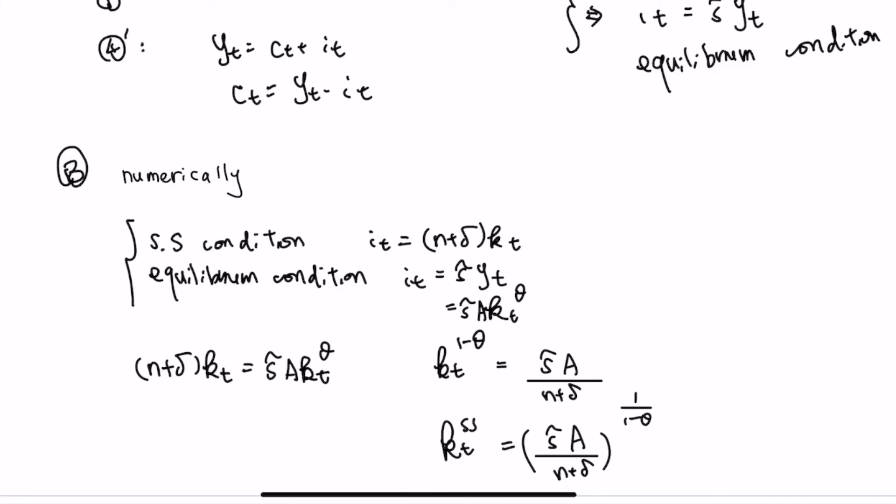As we can see, once the saving rate, production efficiency A, population growth rate n, depreciation rate δ, and capital share θ are all determined, the capital stock in the steady state is fully determined. That is how we solve for the capital stock in the steady state.